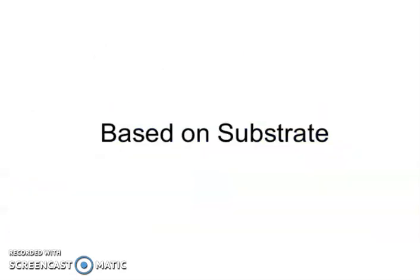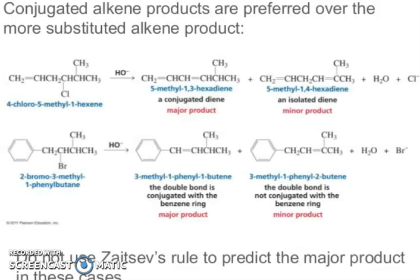Exceptions to the Zaitsev rule, based on substrates: conjugated alkene products are preferred over the more substituted alkene products. You can see the major product and minor product — a conjugated diene versus an isolated diene. Another example: 2-bromo-3-methyl-1-phenylbutane gives two products, one major and one minor. The double bond conjugated with the benzene ring is the major product; the double bond not conjugated with the benzene ring is the minor product. So, do not use the Zaitsev rule to predict the major product in these cases.